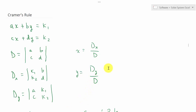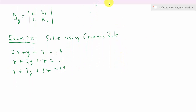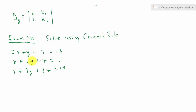The example I'm going to do has three equations and three unknowns: 2x plus y plus z equals 13, x plus 2y plus z equals 11, and x plus 3y plus 3z equals 19. We're going to input the matrices D, D sub x, D sub y, and D sub z into Excel and let Excel calculate everything. Pause the video to write this down if you'd like.